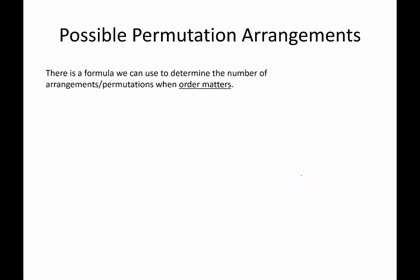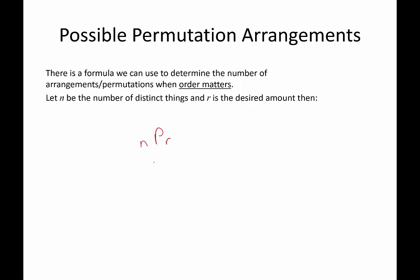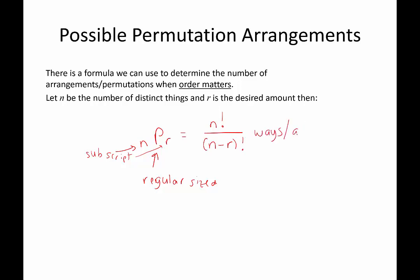On to the formula. For possible permutation arrangements, we use permutations when order matters. We let N be the number of distinct things and R be the desired amount. We say N permuted R ways — the notation is a regular-sized P with N and R as subscripts. The formula is N factorial divided by (N minus R) factorial.